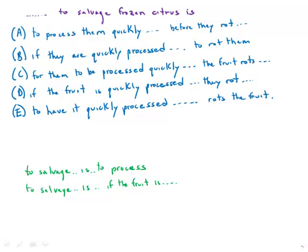This one about salvaging frozen citrus is tricky because there's more variation among the answers than there usually is. First of all, we have an infinitive 'to salvage' before the verb 'is,' and the question is which is a better structure.